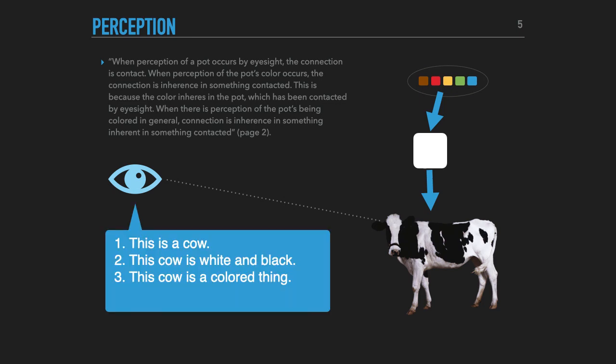So through perception, I have contact with the cow particular, Bessie, the particular cow. I have contact with the whiteness, the quality of white and black in her. And I can know that the white color that I am seeing is a color because of its having a connection to the idea, the concept of color. So this is what he's talking about in the first section when he's talking about perception.